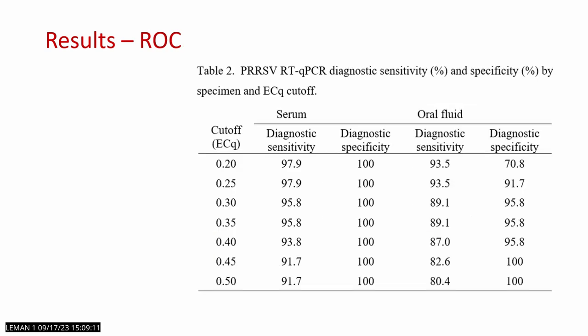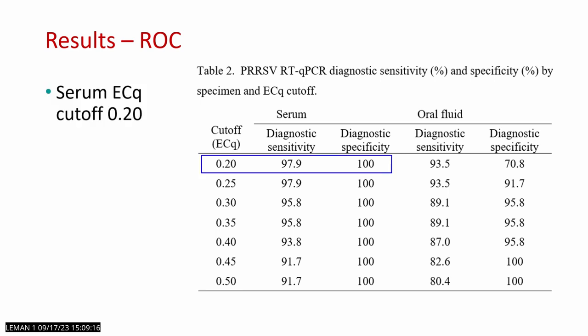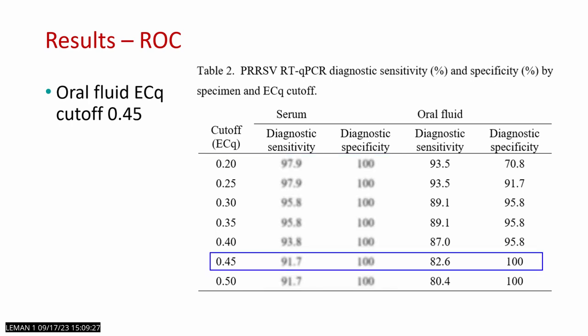This table shows median CQ and ECQ for serum and oral fluid. The optimal ECQ cutoff for serum was 0.20 with a diagnostic sensitivity of 97.9% and specificity of 100%. For oral fluid, it was 0.45 with 82.6% sensitivity and 100% specificity.